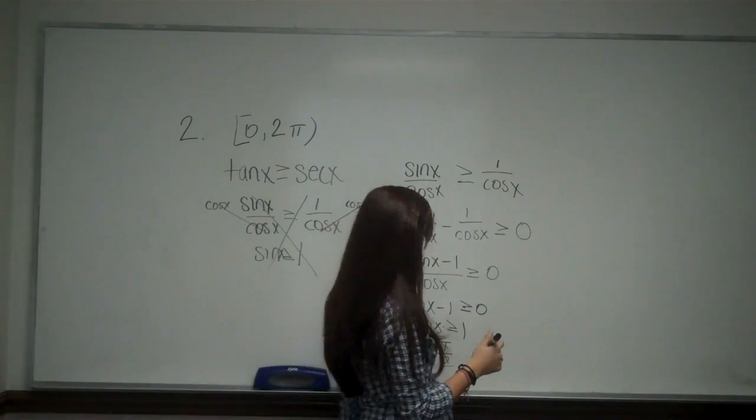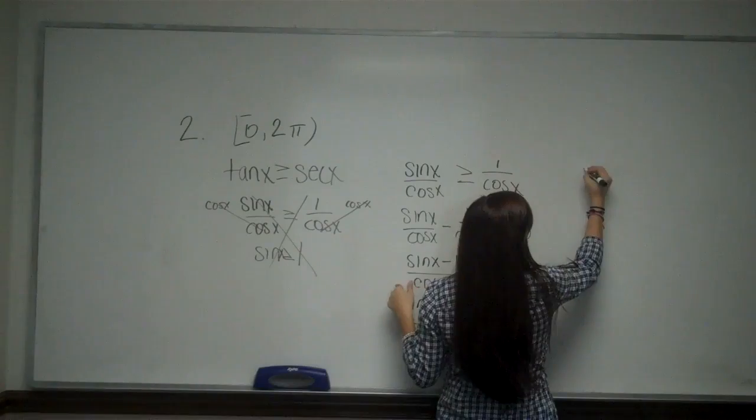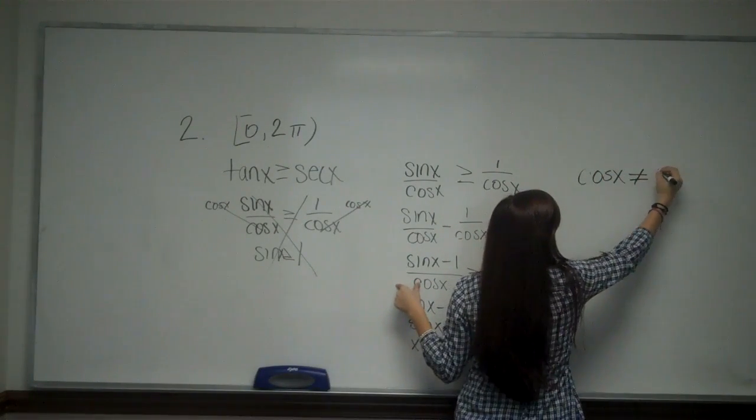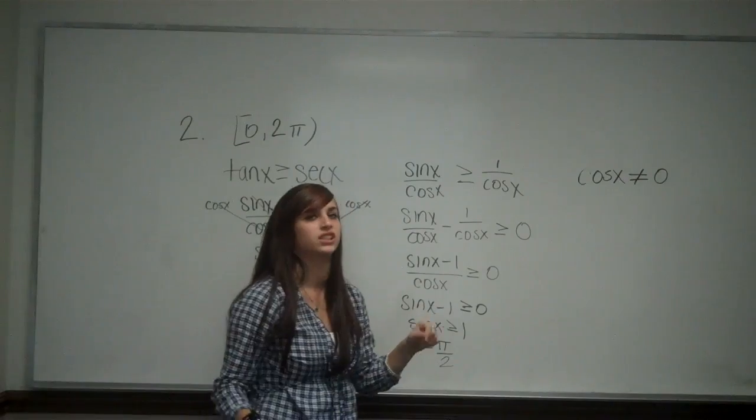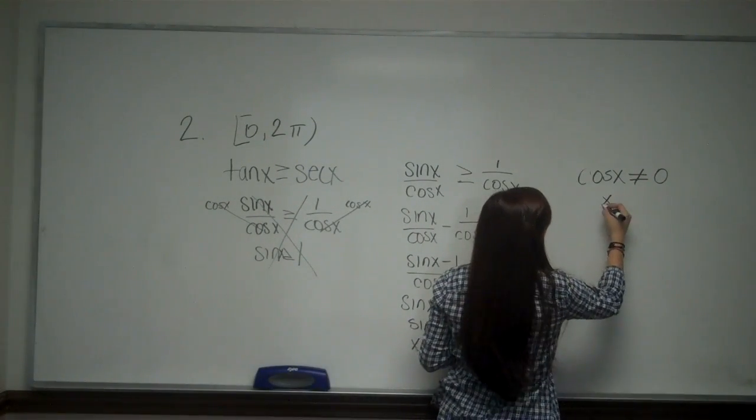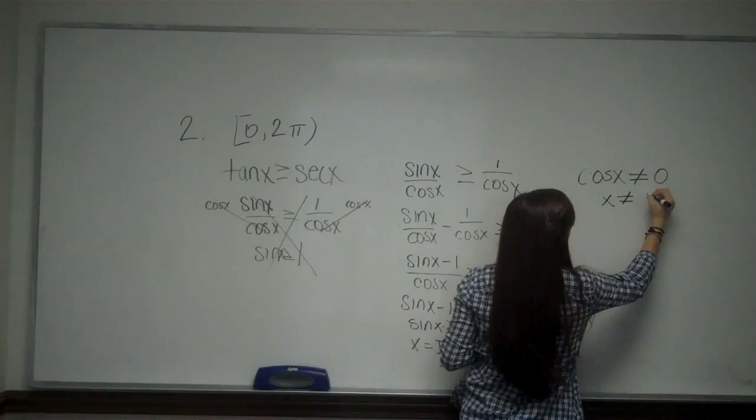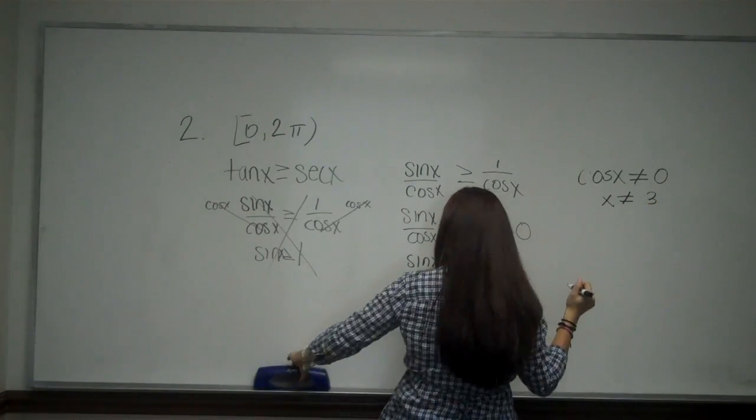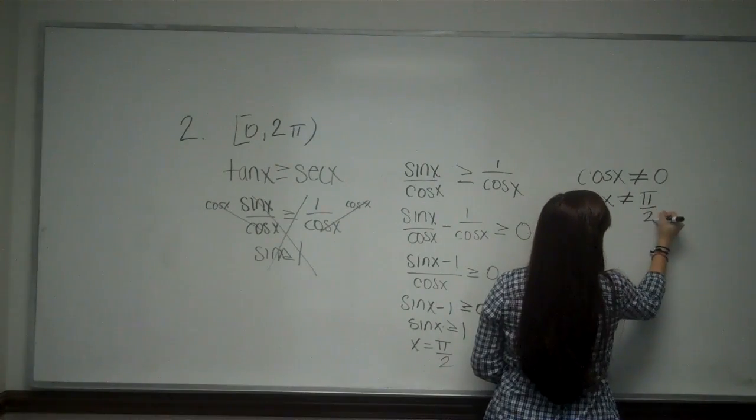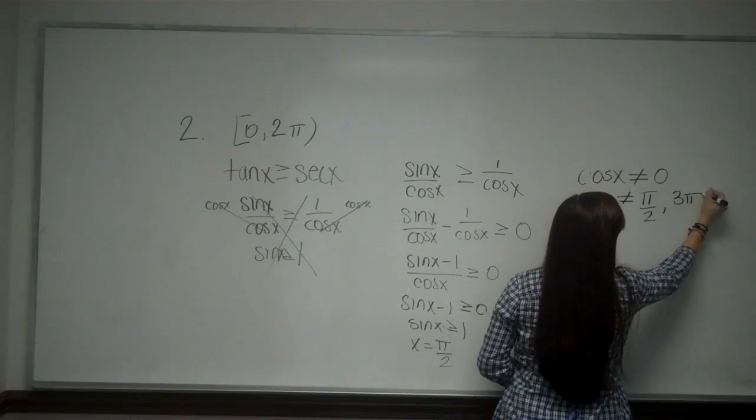I now also need to look at my denominator. My denominator is cosine x which cannot equal zero otherwise the function is undefined. So when cosine x is zero, x cannot be the pi over two value or three pi over two.